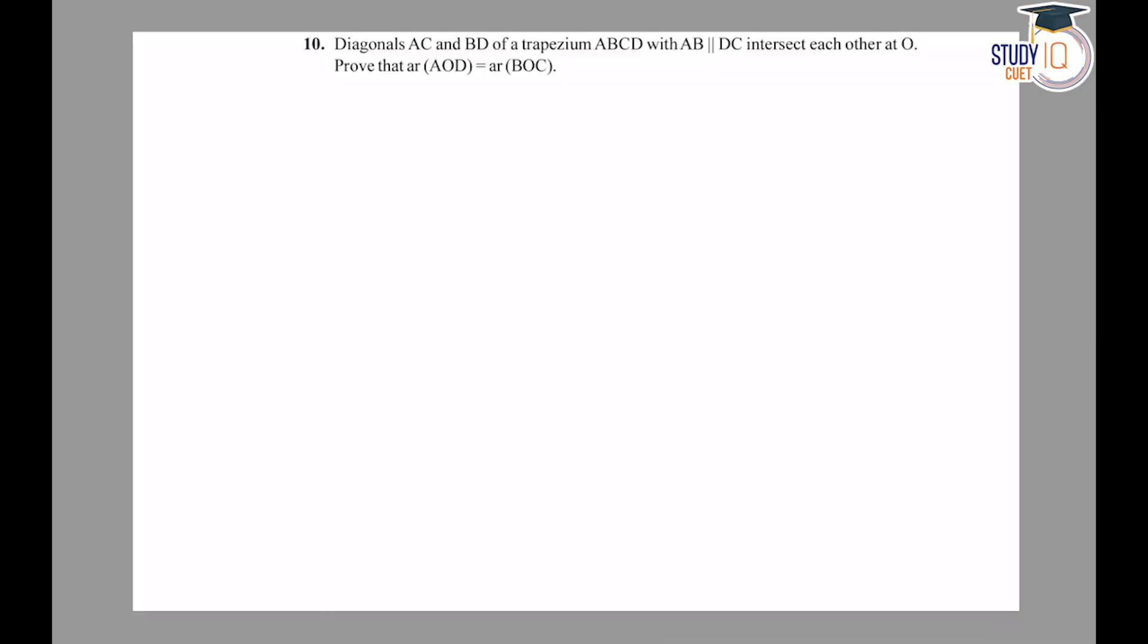Hello students, this is NCERT Maths Class 9th, Exercise 9.3, Question Number 10. The question is: Diagonals AC and BD of trapezium ABCD with AB parallel to DC intersect each other at point O. Then prove that area of triangle AOD equals area of triangle BOC. First, I will draw trapezium ABCD.